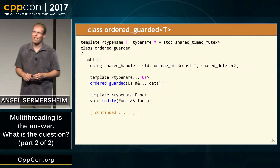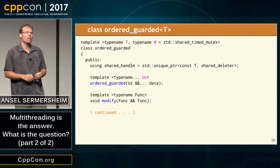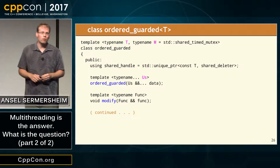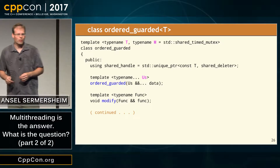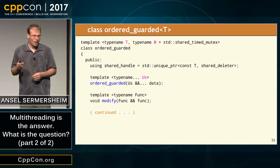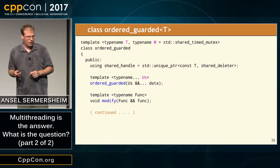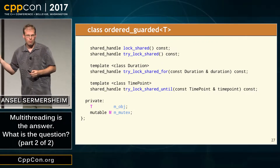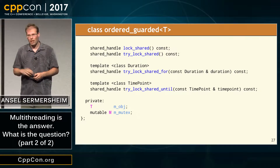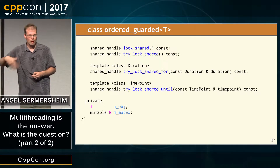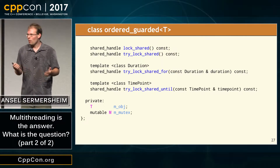It constrains the cases in which you can hold the resource locked indefinitely to those where the functor never returns — and we're not usually in the habit of writing code that never returns. Could you return a non-movable, non-copyable type? You could, but those are kind of annoying to work with in this context. Also, shared handles — I don't care as much if they escape, so you can get read access any way you'd like, but you can only modify the value through this very specific API.